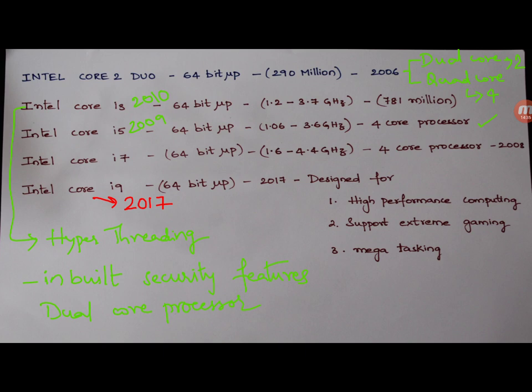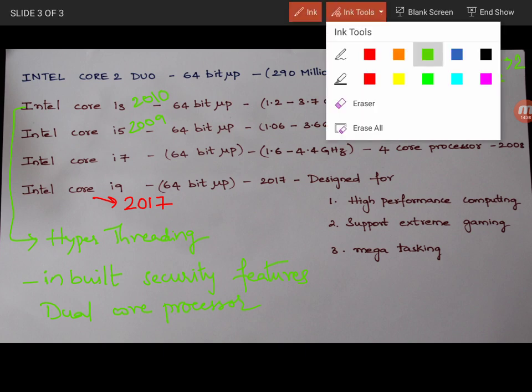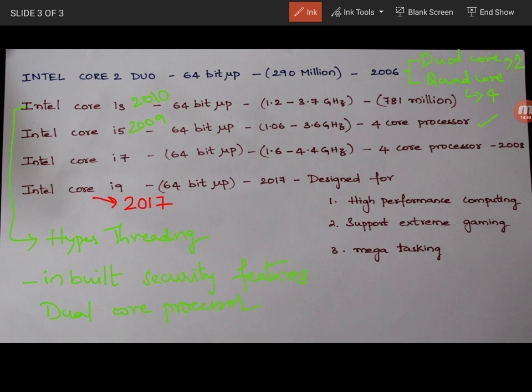So this Core i3, the i stands for, so i is nothing but Itanium processor. And it is only the name given by the Intel. It is a name given by the Intel for these series. Core i3, Core i5, i7, i9.